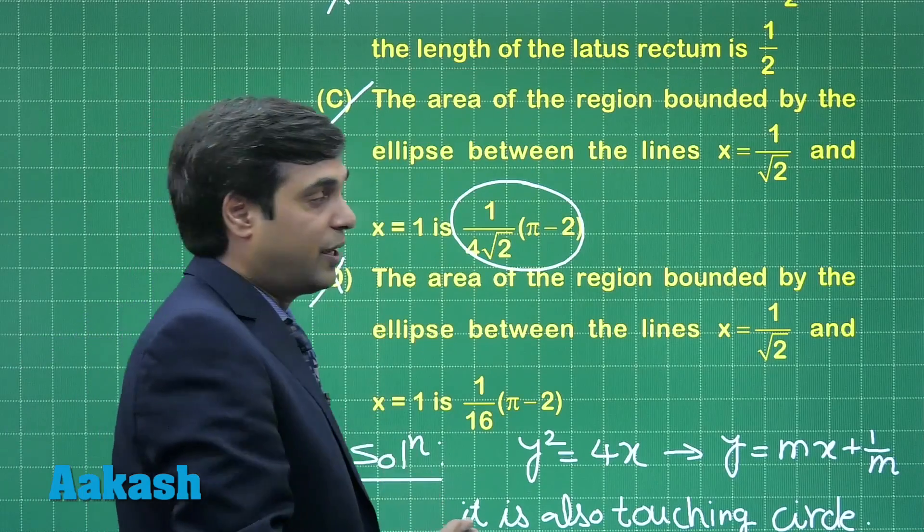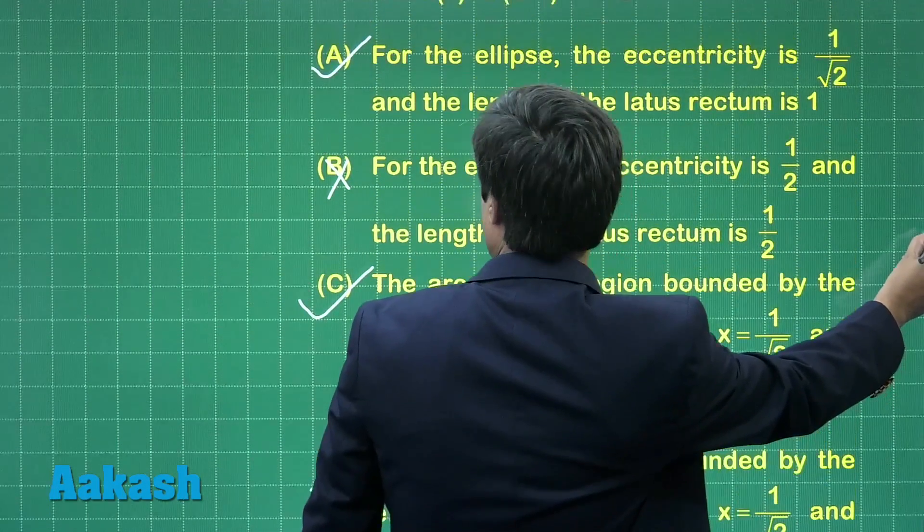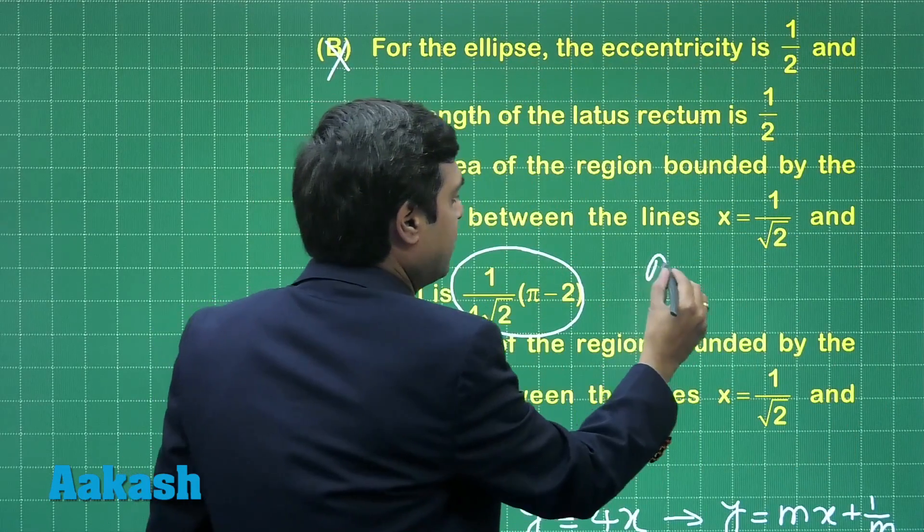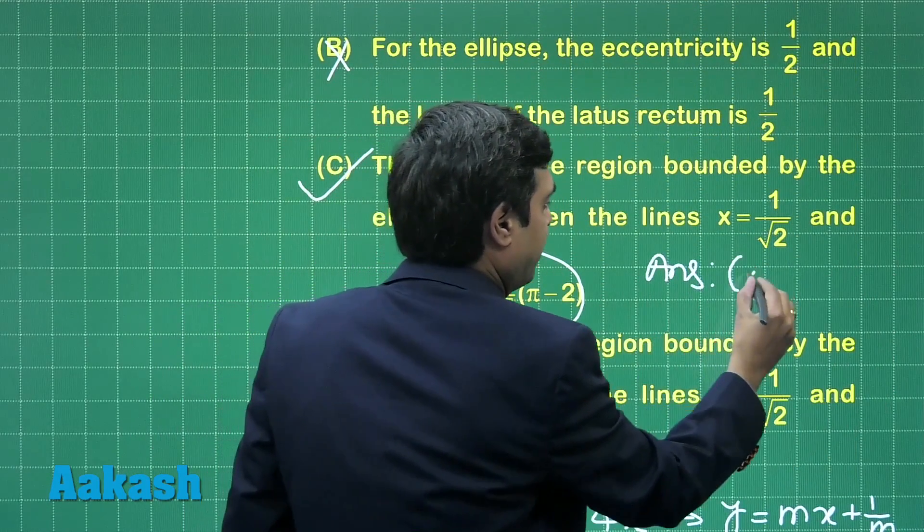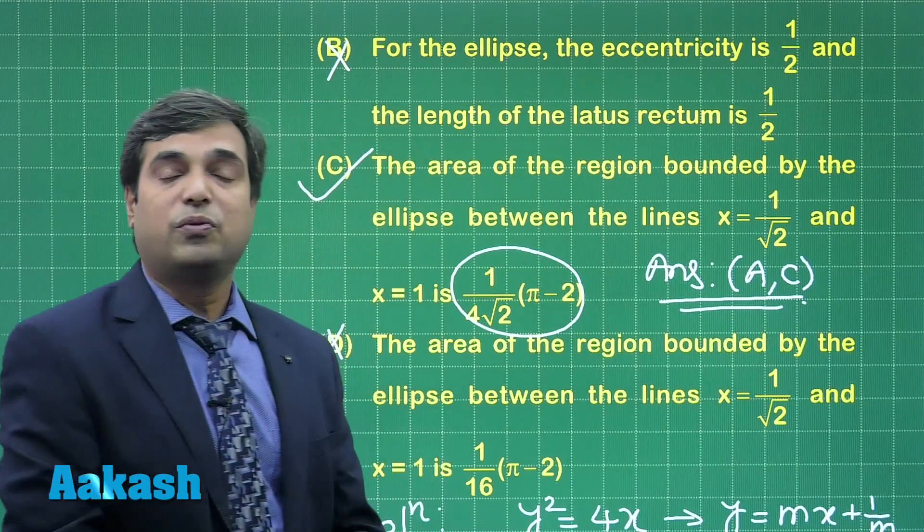So option D is not correct. So from the given four options we finally get A and C as the correct answer. Now move to the next question.